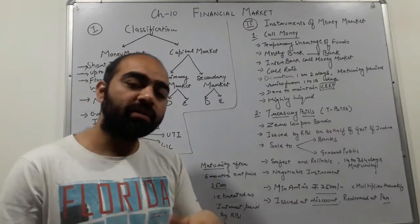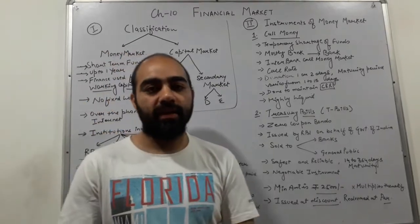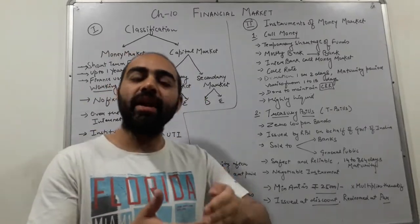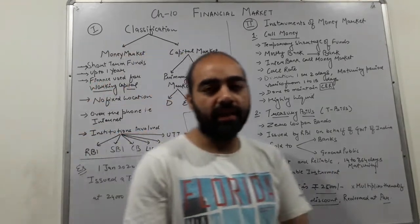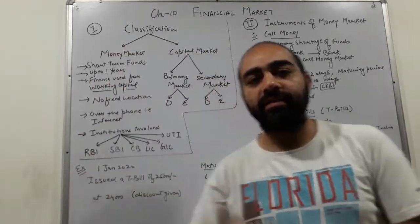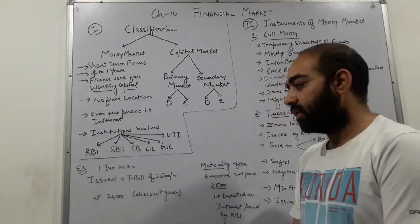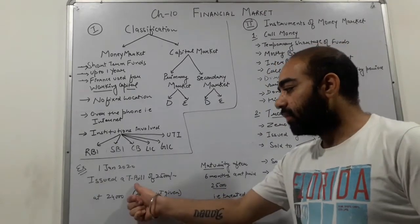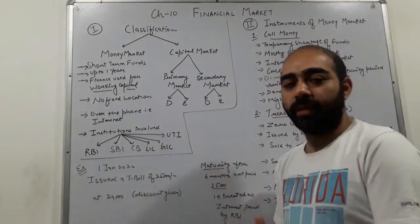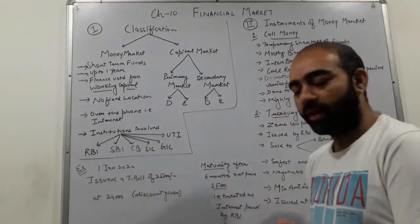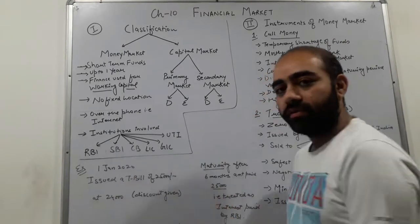People invest in T-bills because they are issued at a discount and redeemed at par. For example, if you purchased a T-bill on 1st January 2020 with a face value of 25,000 rupees, you did not pay the full 25,000 rupees — you paid only 24,000 rupees. At maturity, you receive the full face value of 25,000 rupees, and the difference of 1,000 rupees is your profit or return.